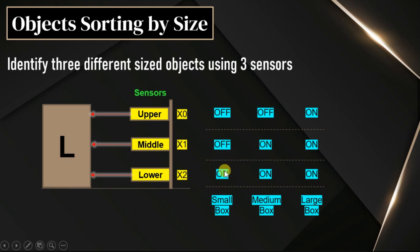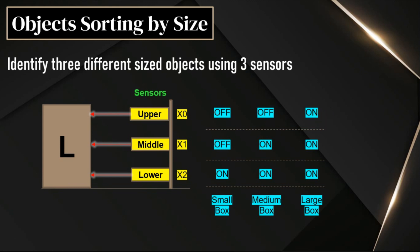Assume on as 1 and off as 0. So for a small box, the pattern is 1, 0, 0. For a medium box, it is 1, 1, 0. For a large box, it is 1, 1, 1 — all sensors will be activated. By using this pattern, we can identify the size of the box.